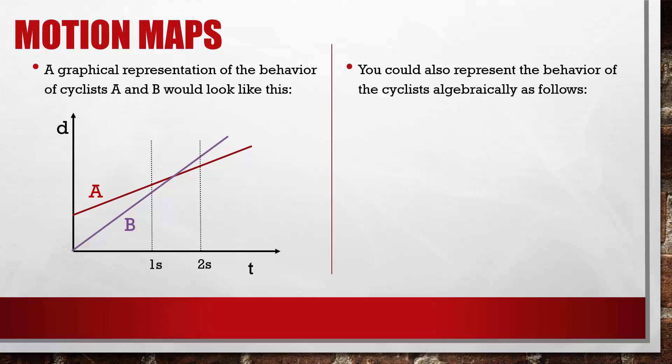We can also represent the behavior of the cyclists algebraically as follows. The displacement of cyclist A equals the velocity of cyclist A times time plus the initial displacement of cyclist A. The displacement of cyclist B equals the velocity of cyclist B times time. And in this case, we know that the velocity of cyclist B is greater than the velocity of cyclist A.